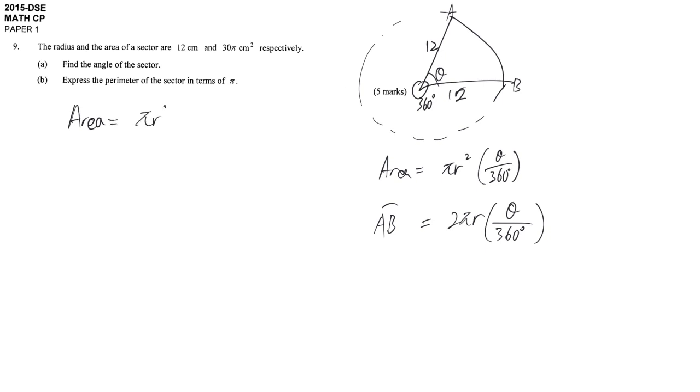Area is equal to πr² times θ over 360. Area is given, it is 30π. R is given, it is 12 squared, θ over 360. So it's obvious that the question is leading you to find out the angle of the sector. We can find out how large is this angle.